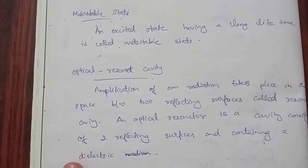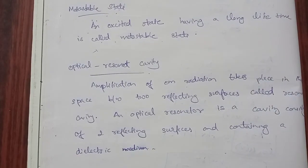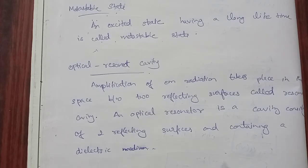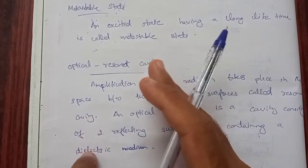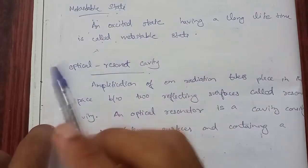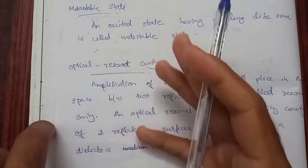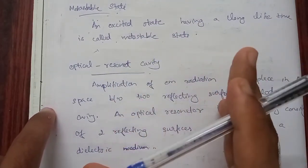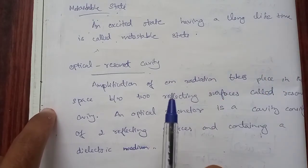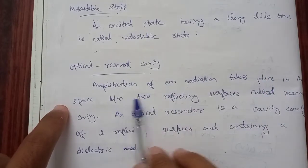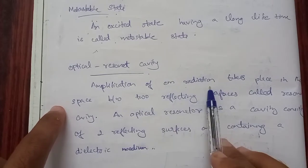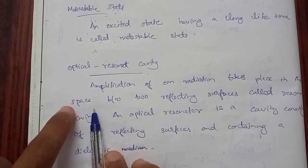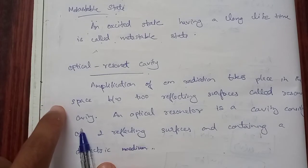Next is the Optical Resonant Cavity. The optical resonant cavity is where amplification takes place — one laser or one light is amplified. This amplification of electromagnetic radiation takes place in the space between two reflecting surfaces, and that space is called the resonant cavity.